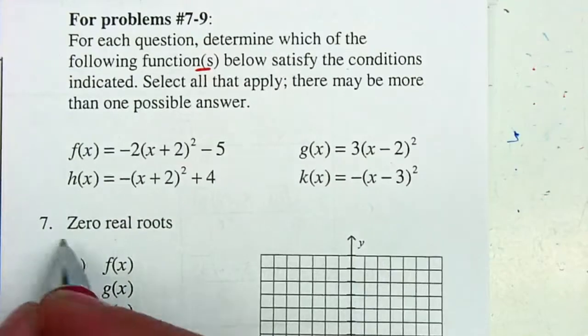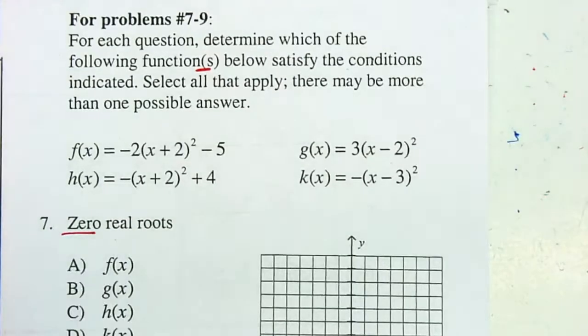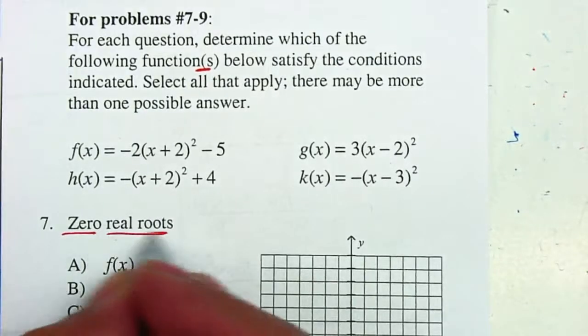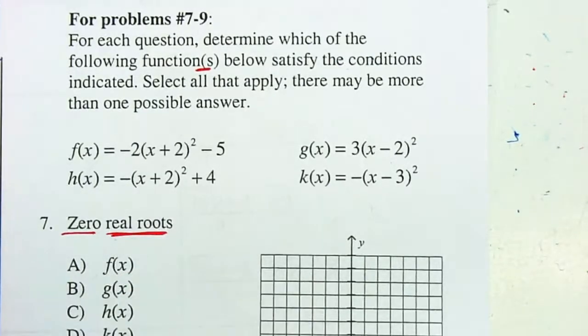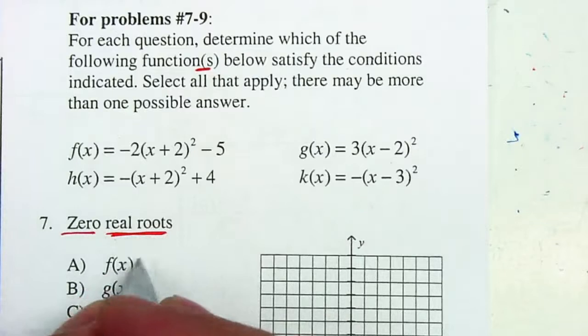And the options that they give you is whether you have zero, one, or two real roots. Remember, your roots, your real roots, is how many times does it cross the x-axis? Your real roots are your x-intercepts.